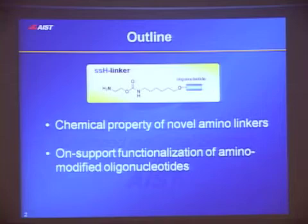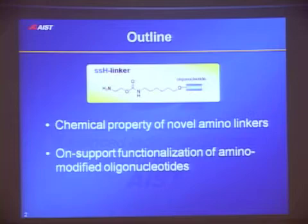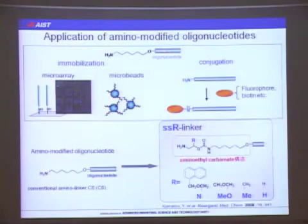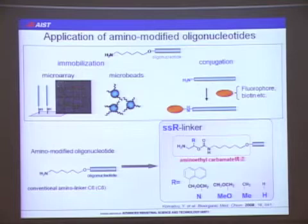We call this very short non-substituted SSH linker. In the second part, I will talk about the application of this type of oligonucleotides. Amino oligonucleotides are very useful materials, which we can use to immobilize oligomers to microslides or microbeads. This can also be derivatized to useful materials.